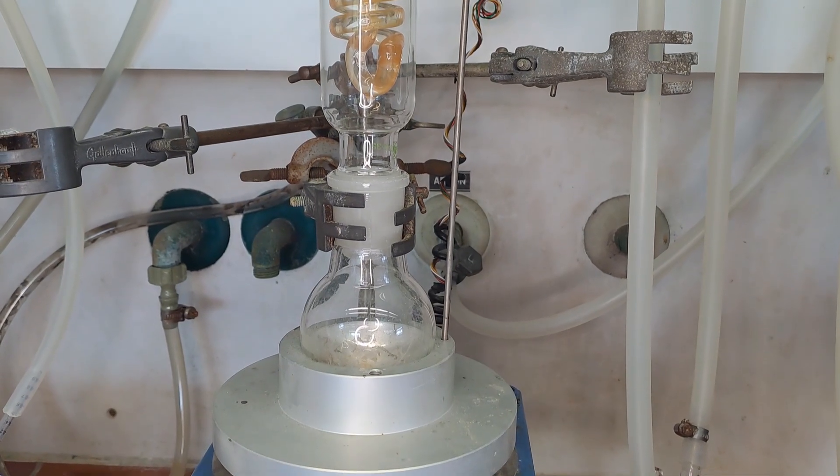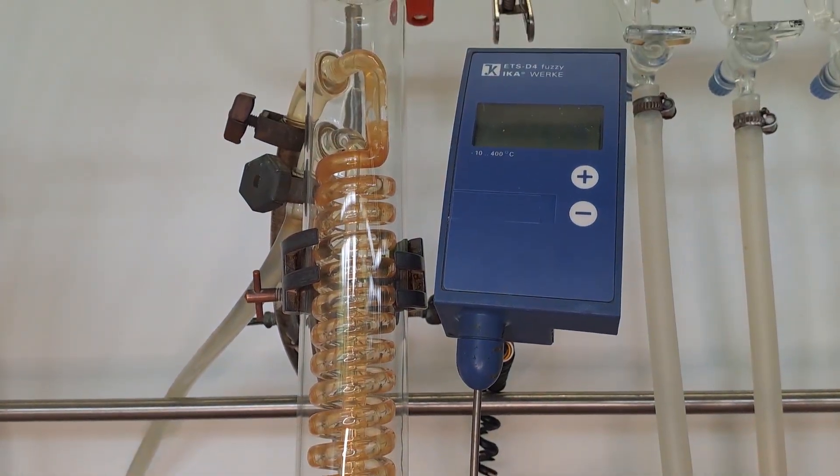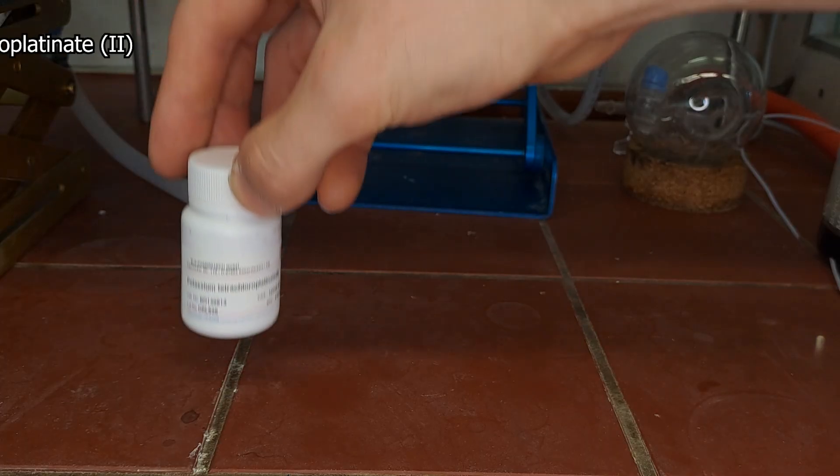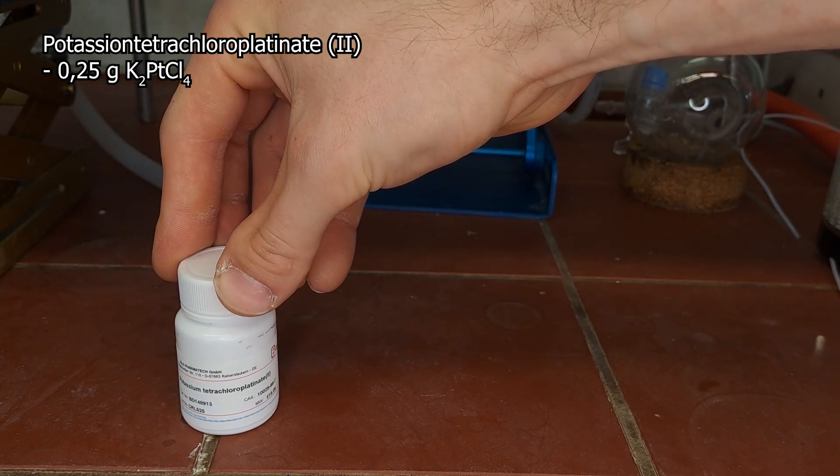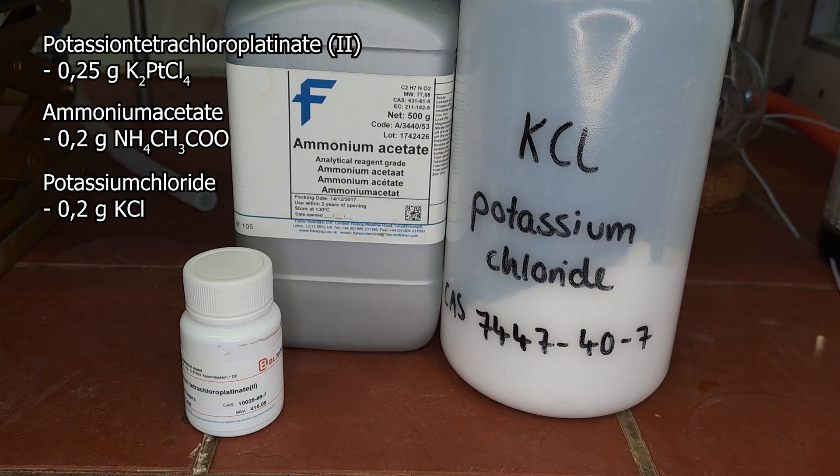Equipment needed: We'll need a round-bottom flask, a heating block, a Dimroth condenser, and a thermometer. Chemicals required: we'll use some potassium tetrachloroplatinate, ammonium acetate, potassium chloride, and water.